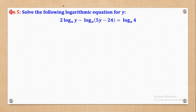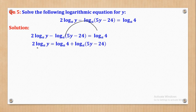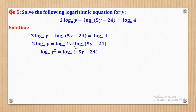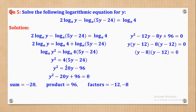Question 5: solve the logarithmic equation for y. Since the base is the same, the logarithm rules apply. Moving terms to one side and using the multiplication rule, then eliminating the logarithm gives a quadratic in y. Factorizing gives (y minus 8)(y minus 12) equals 0, so y equals 8 or y equals 12.